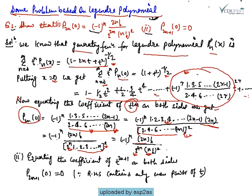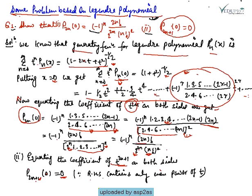For the second part, we equate the coefficient of T^(2n+1) on both sides. On the left side we get P_{2n+1}(0). Since the right-hand side contains only even powers of T (T², T^4, ..., T^(2r)), there is no odd power of T, so P_{2n+1}(0) = 0.